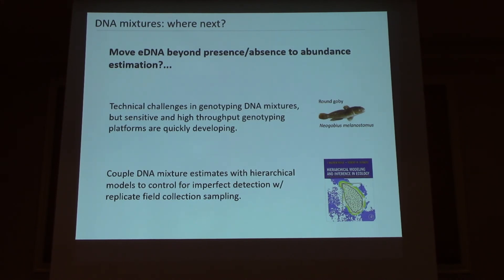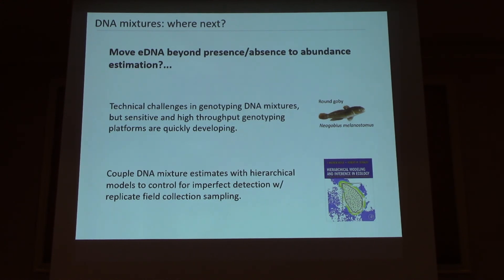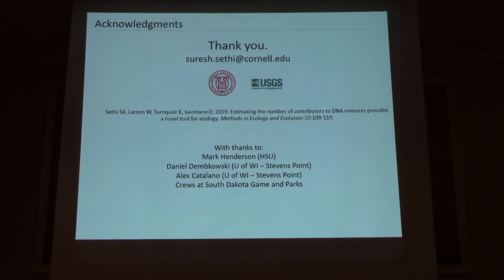I also want to throw a plug in for statisticians and quantitative ecologists, because we should be thinking about the tools we use to analyze these data. I think ultimately this DNA mixture estimator makes a great marriage with newer hierarchical ecological models that are popular amongst quantitative ecologists, because they deal with imperfect detection — whether we're doing eDNA for presence-absence or counting. We have a whole field of statistics that has emerged in the past five years to deal with imperfect detection, so talk to your quantitative ecologists and combine efforts. We have a paper on the estimator that just came out — refer to that or come see me.